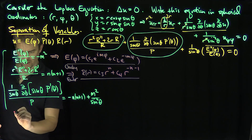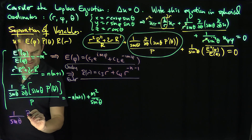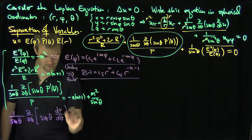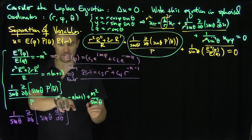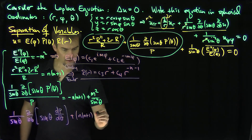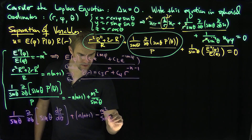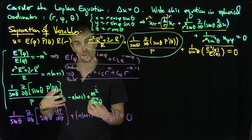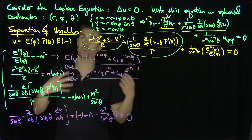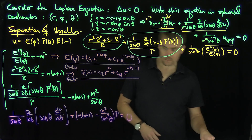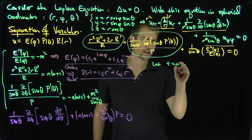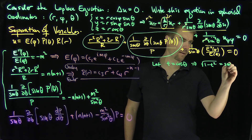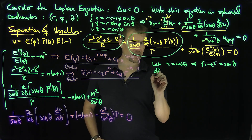Rearranging the theta equation, we get (1/sinθ) d/dθ [sinθ · dP/dθ] + [n(n+1) − m²/sin²θ] P = 0. This is a second-order differential equation that looks complicated, so we change the independent variable to put it into a known form. We let t = cosθ, which implies sinθ = √(1−t²) by trigonometry. Then dP/dθ = (dP/dt)(dt/dθ), and doing a theta derivative is equivalent to a t derivative multiplied by dt/dθ = −sinθ.